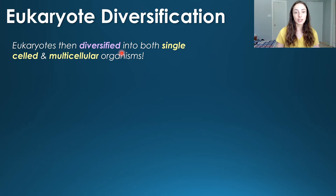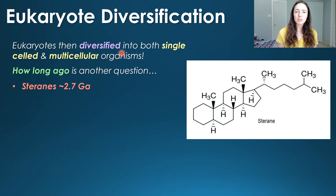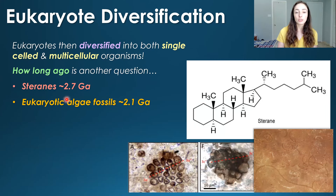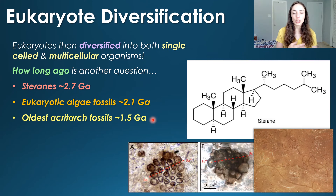Eukaryotes were then allowed to diversify into both single and multicellular organisms. How long ago is another question. Steranes — those membrane-stiffening molecules — are a good indicator of eukaryotic existence in the rock record, being very persistent in terms of preservation. They go back all the way to 2.7 billion years ago, suggesting eukaryotes could have evolved by then. More unequivocal evidence is 2.1 billion year old algae. The oldest acritarch fossils — ancient eukaryotic organisms now extinct — appear somewhere between 1.8 and 1.5 billion years ago.